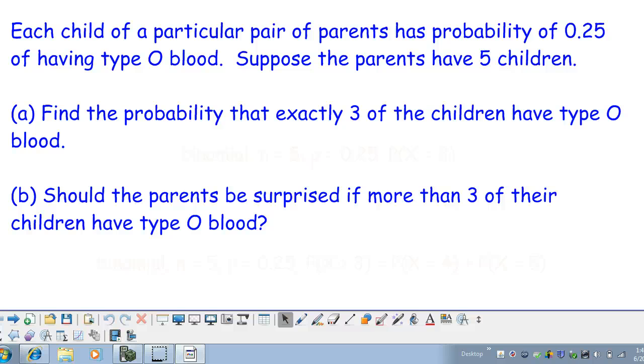Let's see how the TI-83 or TI-84 calculator can help us with this particular probability problem. Here, we have each child of a particular pair of parents having a probability of 0.25 of having type O blood. Suppose the parents have five children.